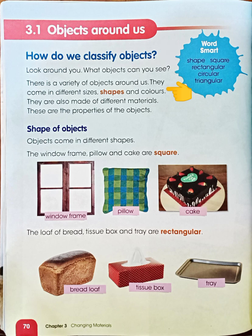Look around you — what objects can you see? I think so many, right? So there is a variety of objects around us. They come in different sizes, shapes, and colors. They are also made of different materials. Remember, we already learned about materials, right? And these are the properties of objects.